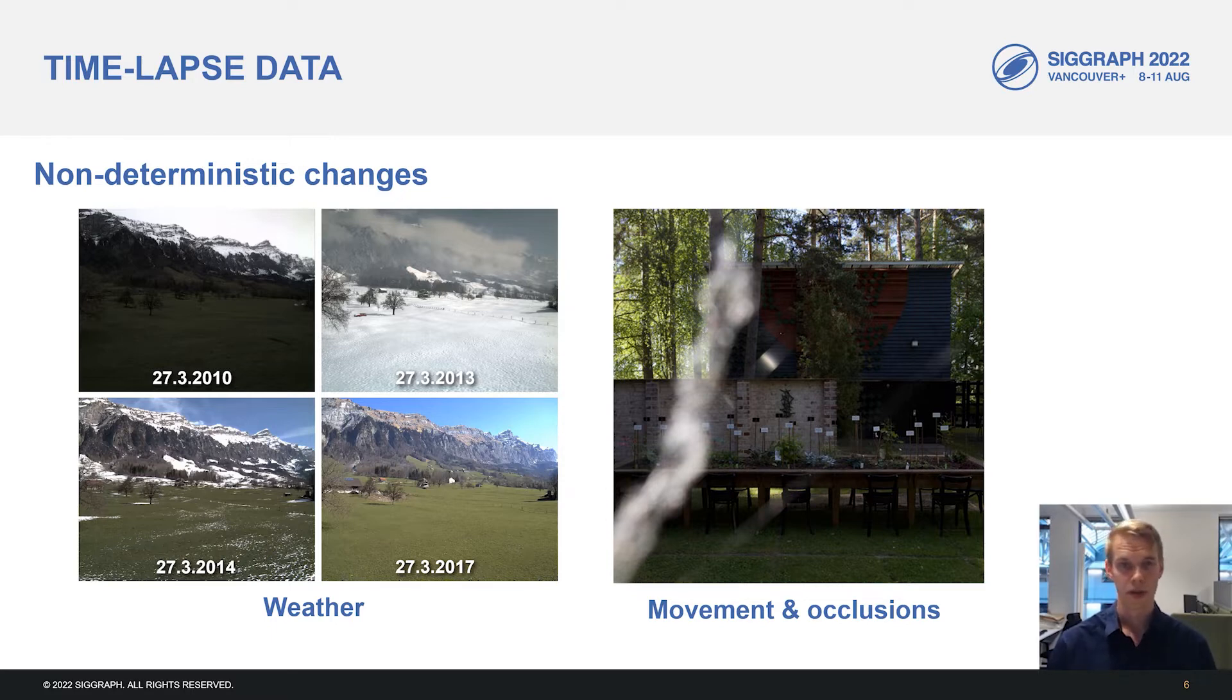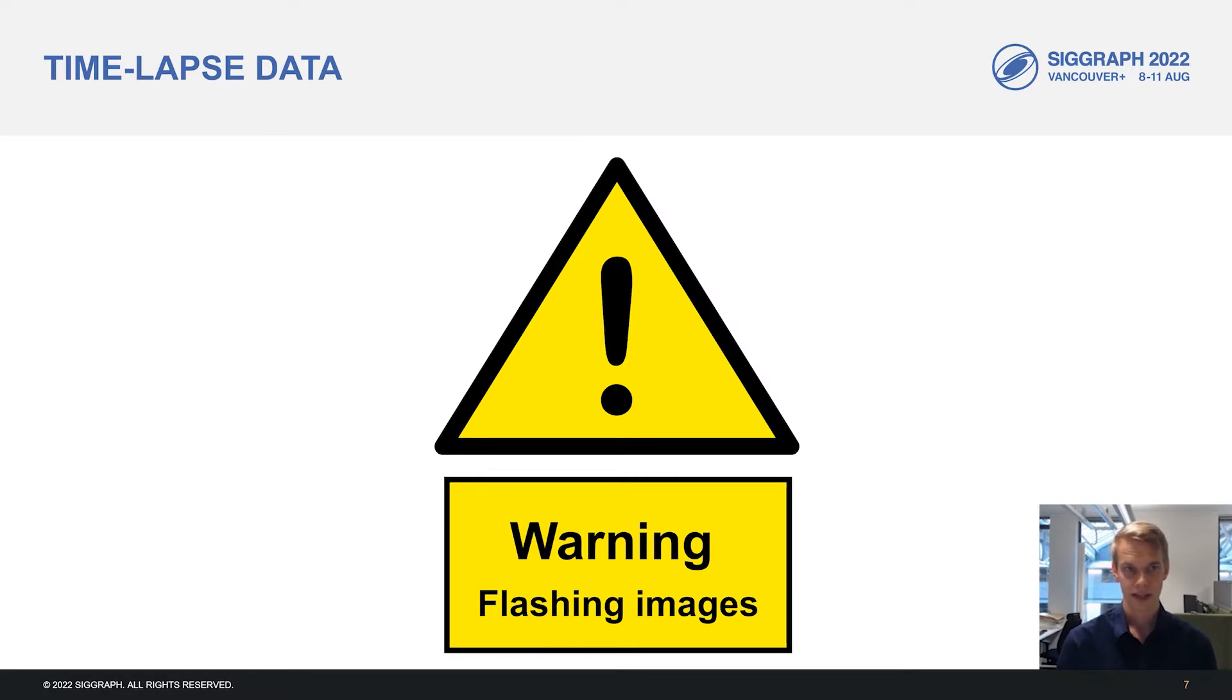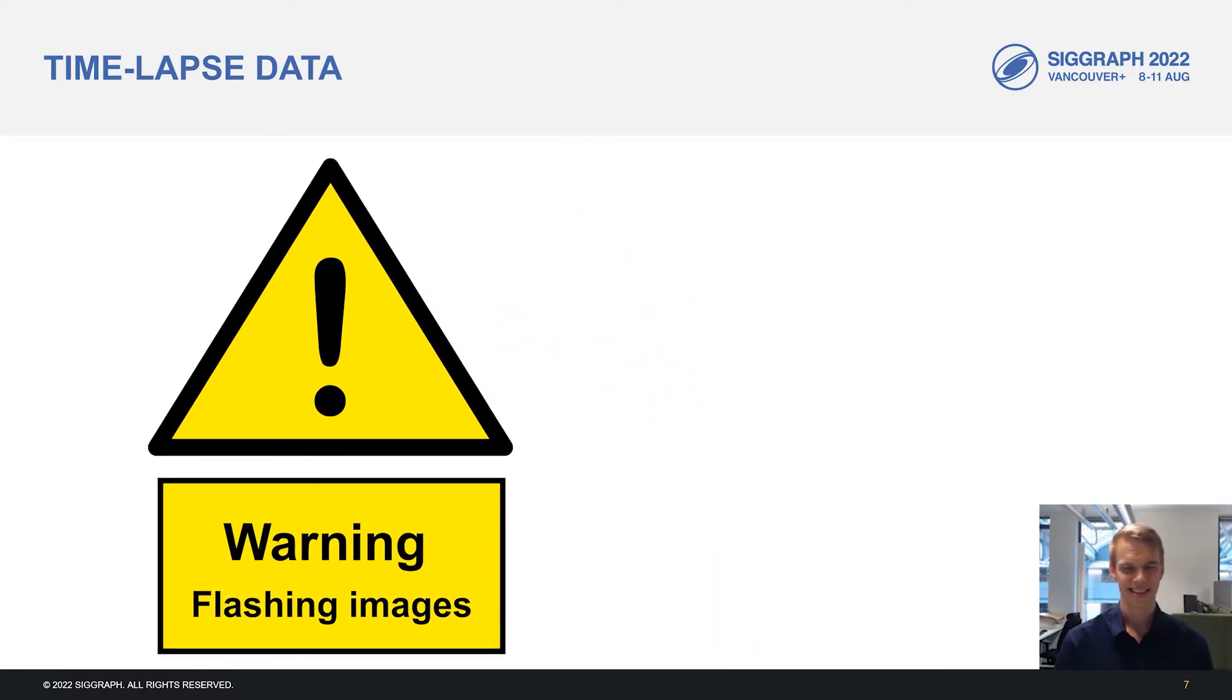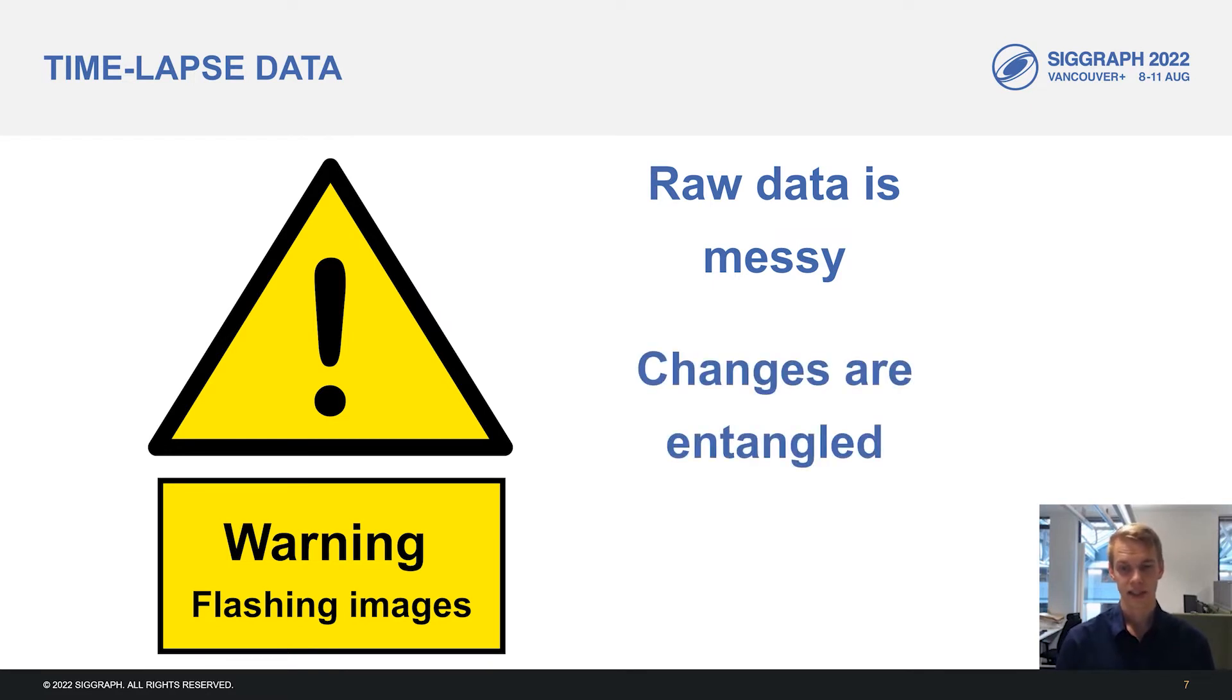We also have random movements and occlusions in the data. We can, for example, have a person walking in front of the camera just as it's capturing a frame. Or a spider web appearing in the frame temporarily. All of this is to say that the raw time-lapse data is quite messy and not that nice to look at on its own. It contains lots of changes that are entangled that happen at the same time. But also, we have lots of redundancy in our data. And maybe we can leverage these properties to generate something that's nicer to look at.